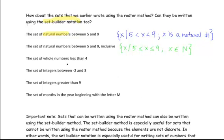In the third example we have the set of whole numbers less than 4. The set of whole numbers is denoted by the capital letter W, in case you want to write it in element-of form. For the fourth example, the set of integers between negative 2 and 3: we write open curly bracket, x such that negative 2 is less than x, which is less than 3, and x belongs to Z — the capital letter Z is used to denote the set of integers.